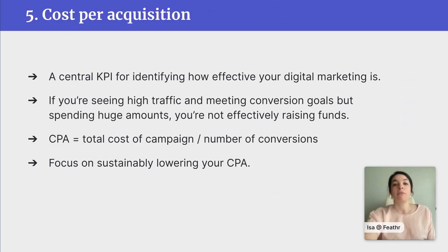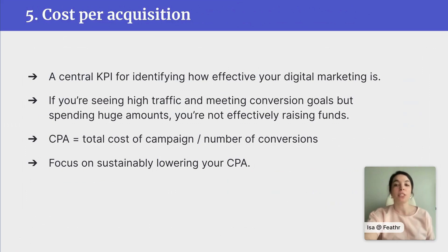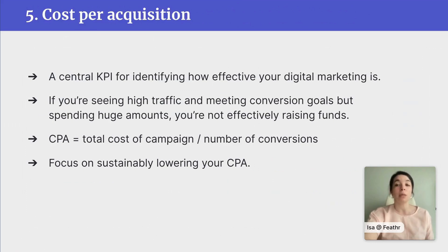Cost per acquisition is a central KPI for identifying how effective your digital marketing actually is. You could be seeing high overall traffic and even reaching your conversion goals, but if you're spending huge amounts of money to do that, you're not really effectively raising money for your cause. To calculate this, you divide your marketing spend — or the total cost of the campaign including salaries and expenses — by the number of donations made or volunteers recruited, whatever your conversion figure is. That'll tell you how much you're spending per acquisition. There's not really a universal benchmark for this — just focus on keeping yours low and lowering it over time in ways that work for you.